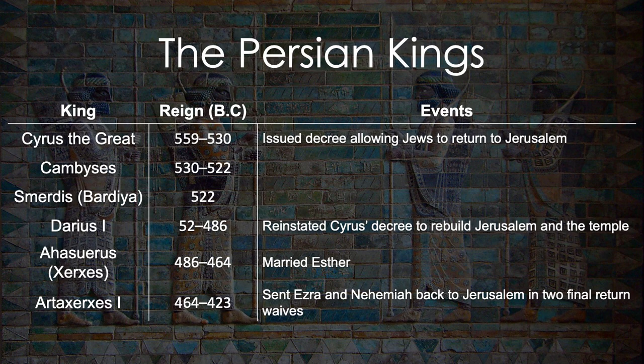Just a quick reminder of where we are historically — these are the kings we deal with when talking about Israel, Judah, and Babylon. The only king we'll be dealing with tonight is Ahasuerus, which is the Hebrew name. His name is also Xerxes, and throughout this lesson I'm going to refer to him as Xerxes because that's what most people recognize and it's a lot easier to say. They're one and the same — a Hebrew name and a Greek name — and he's a prominent character in the story of Esther.